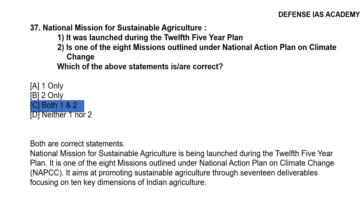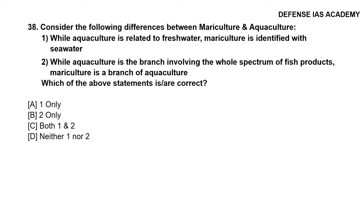Question 38: Consider the following differences between mariculture and aquaculture: 1. While aquaculture is related to freshwater, mariculture is identified with seawater; 2. While aquaculture involves the whole spectrum of fish products, mariculture is a branch of aquaculture. The correct answer is option C, both 1 and 2 are correct.